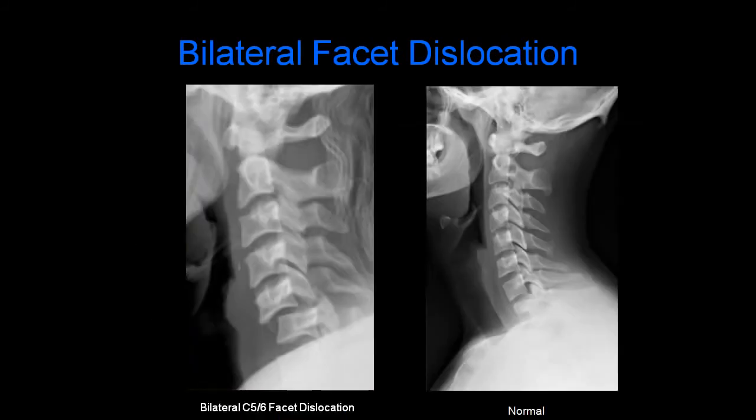Here we have a radiograph of bilateral C5-6 facet dislocation. We can see anterior subluxation of C5 on C6. When looking at the posterior elements at the C5-6 level, they look like a bowtie — this is called the bowtie sign. On the right, we have a normal radiograph for comparison.